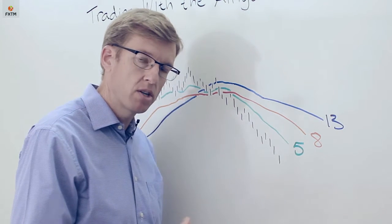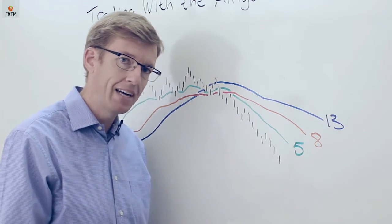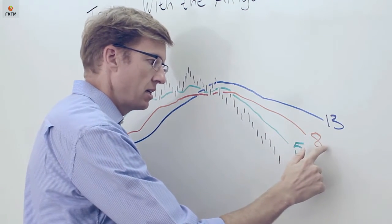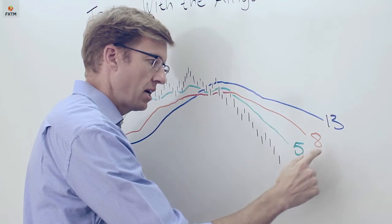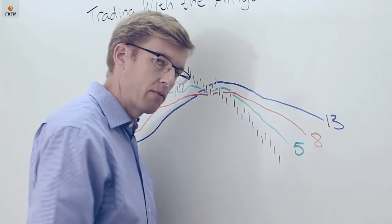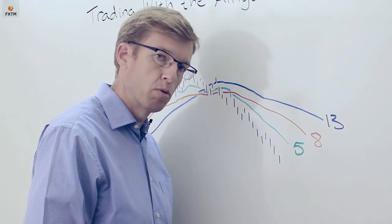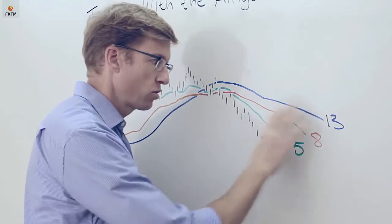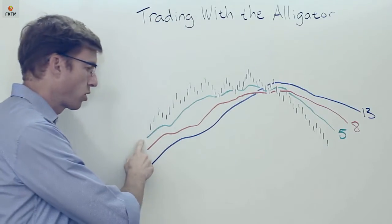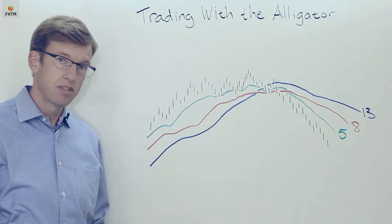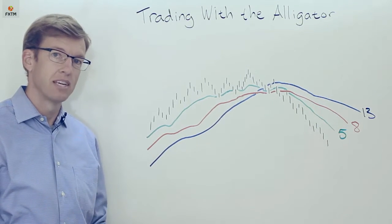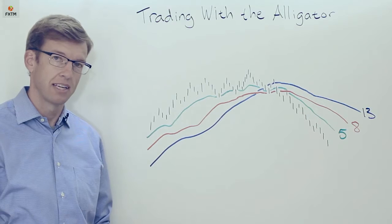We assume that there's a bearish trend intact when the jaw is above the teeth of the alligator, which is above the lips of the alligator, especially if they're diverging, showing a lot of growing momentum. Just the reverse would be true for a bullish trend where the lips of the alligator are above the teeth, which are above the jaw.